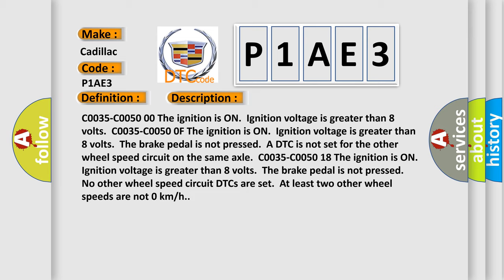C0035-C005018: The ignition is on, ignition voltage is greater than 8 volts, the brake pedal is not pressed. No other wheel speed circuit DTCs are set. At least two other wheel speeds are not zero kilometers per hour.